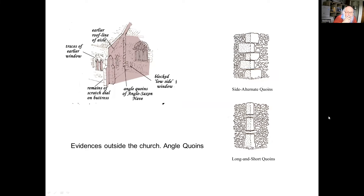External evidences: the low side window, set low in the wall at the west end of the chancel. Antiquaries love to debate the function of these. The best bet is that it's where they had a lamp at night to dispel evil spirits from the churchyard. Also visible are the original cornerstones or angle quoins. One of the giveaways for a Saxon church is they have great big meaty quoins, often termed megalithic or monolithic, coming in various forms — side alternate, and long and short of uprights and flat stones.